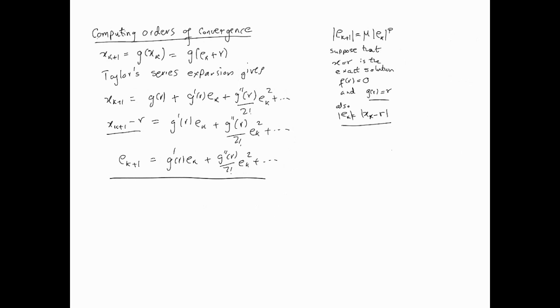If we start with the fixed point iteration, as you know, one of the key requirements of convergence we've looked at is that this g'(x) must be less than 1. And if it is less than 1 on the interval where we are searching for the root, then we know that the fixed point iteration method will converge. Now, that would indicate that our g' is not necessarily 0.